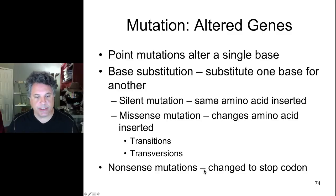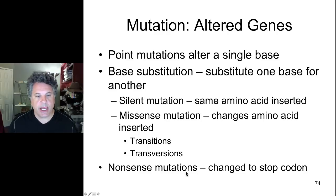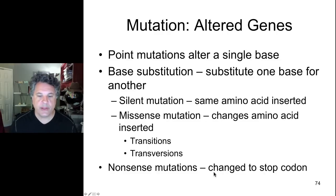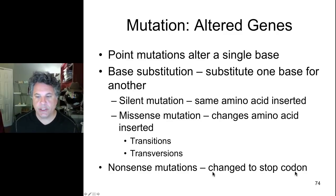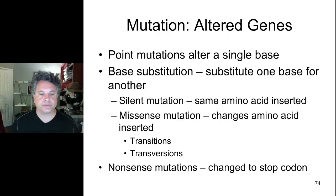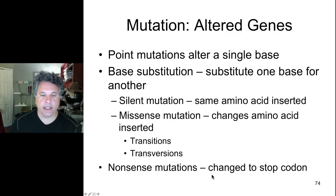Nonsense mutations, which can also be caused by transitions or transversions, are mutations in which the genetic code is changed such that not an amino acid is inserted at all. Instead, a codon is changed from an amino acid-coding codon to one of the three stop codons found in the universal genetic code. Since stop codons stop translation when encountered by the ribosome, nonsense mutations lead to premature truncation of a protein and usually produce a completely non-functional protein.